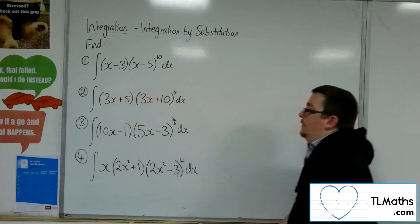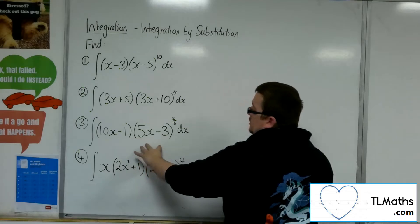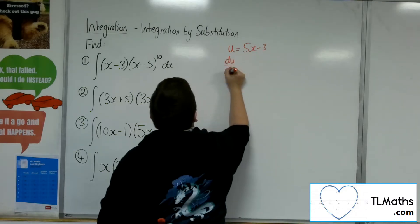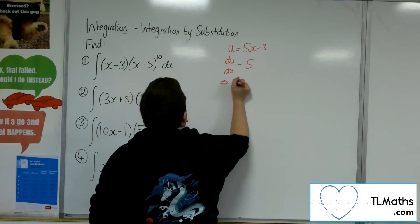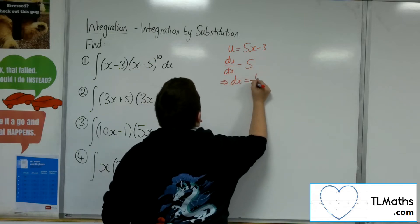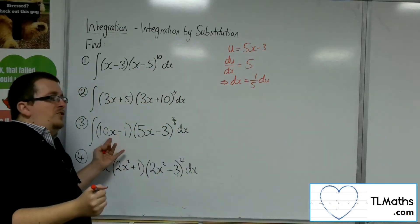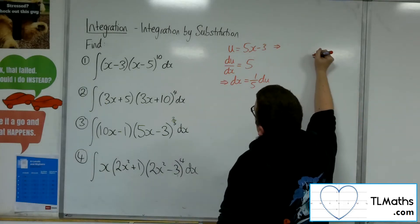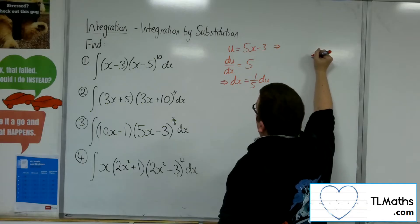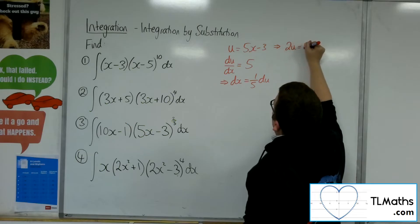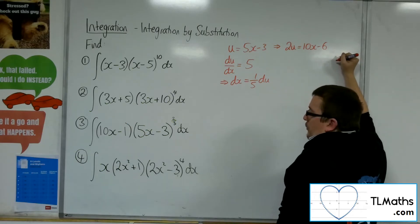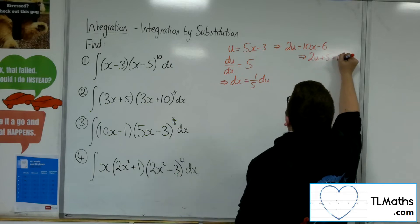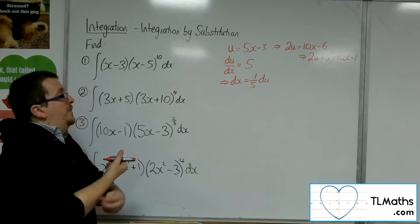Number 3: we've got the integral of 10x minus 1 times 5x minus 3 to the two thirds dx. The u would be 5x minus 3, so du by dx equals 5. Multiplying through by dx and dividing by 5, we get a replacement for dx. We also need a replacement for 10x minus 1. To get the 10x, I'm going to have to multiply both sides by 2, so 2u is 10x minus 6. Then to get minus 1, I'd have to add 5 to both sides, so 2u plus 5 is 10x minus 1.